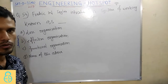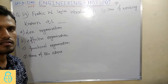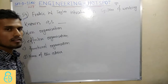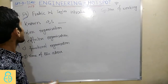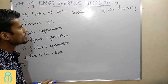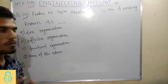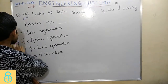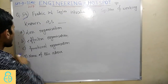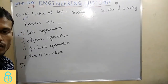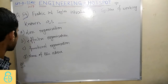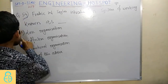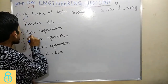This question is from the ISRO 2017 December paper, which is given in the description. The question asks about Frederick W. Taylor, who introduced a system of working. The options are: Line Organization, Effective Organization, Functional Organization, and D) None of these. We are going to explain Line Organization, Functional Organization, and Effective Organization.